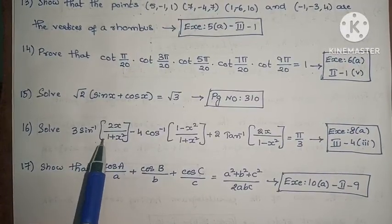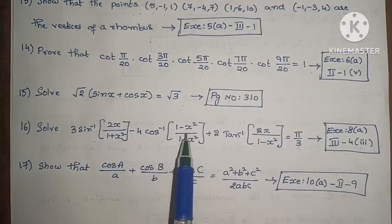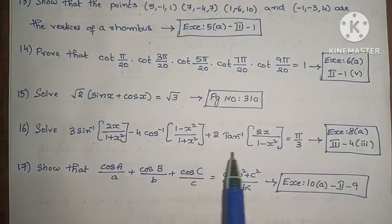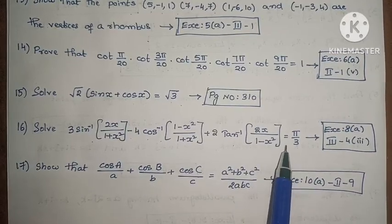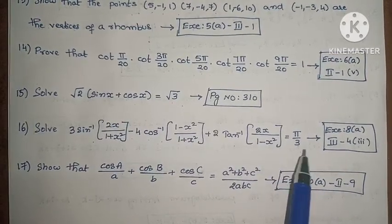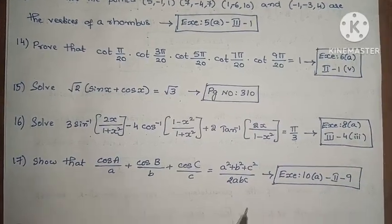Next, solve 3 into sin inverse of 2x by 1 plus x squared minus 4 into cos inverse of 1 minus x squared by 1 plus x squared plus 2 into tan inverse of 2x by 1 minus x squared equals 5 by 3. Exercise 8, Third Roman, Fourth, Third one.